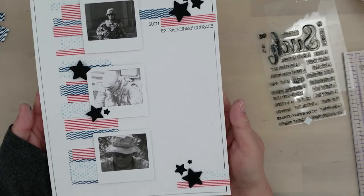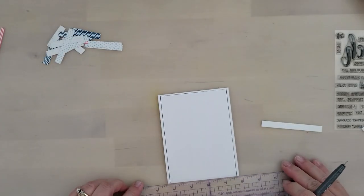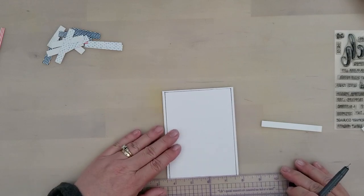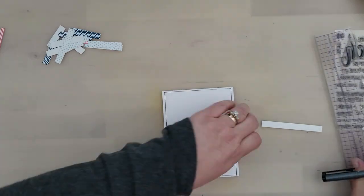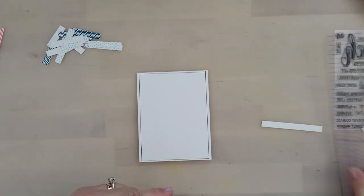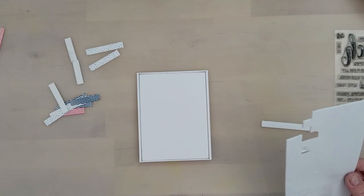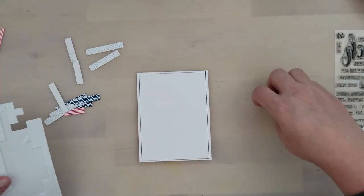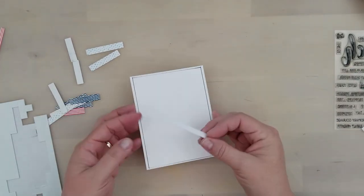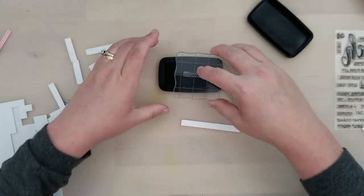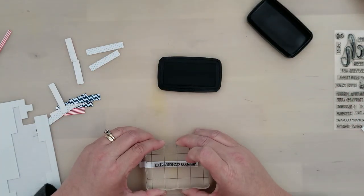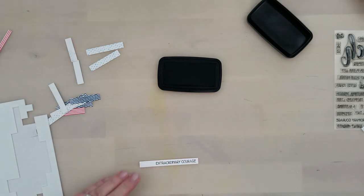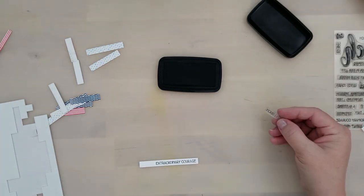So I do want to go ahead and walk you through real quick the card that I created using the same products. So here we are - we're going to go ahead and do the card real quick. I have an A2 card base, same cardstock that I used on the layout, the Avalanche White 110 pound cardstock. I did draw that border around the edge of the card and I just used the same Copic Multiliner black pen and my ruler to do that.